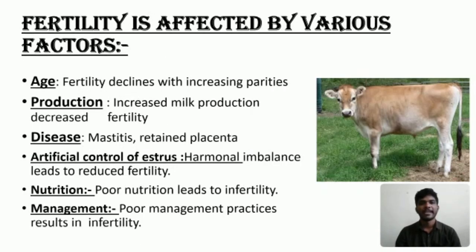Fertility is affected by various factors such as age — fertility declines with increase in age. Production — high milk production decreases fertility. Diseases such as mastitis and retained placenta cause infertility in animals. Hormonal imbalance leads to reduced fertility. Poor nutrition leads to infertility. Poor management practices also result in infertility.